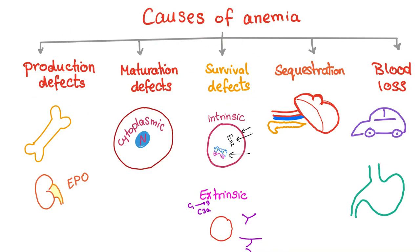Hypoproliferative includes production defects and maturation defects. Production defects involve a problem in the bone marrow — such as bone marrow damage — or a decrease in EPO, like from kidney damage. We can also have hypometabolic states such as hypothyroidism, which can cause anemia.